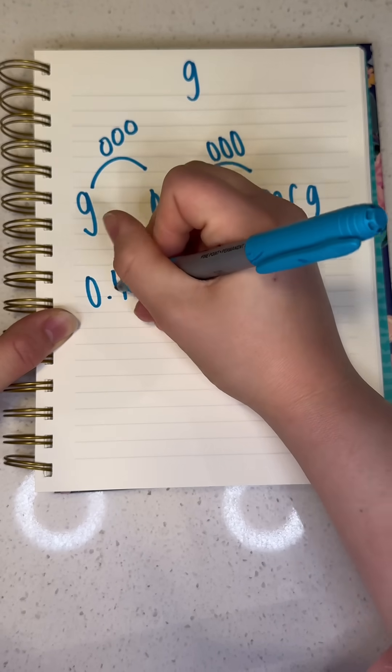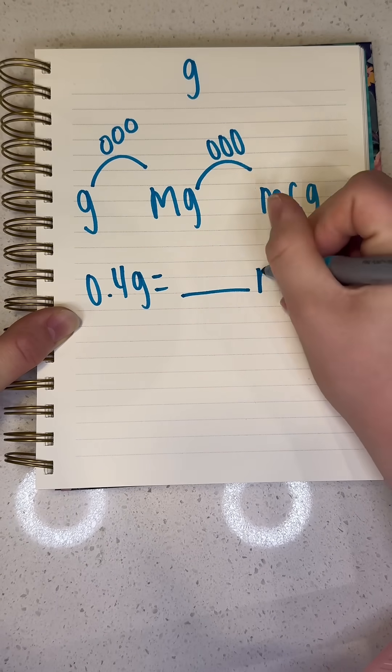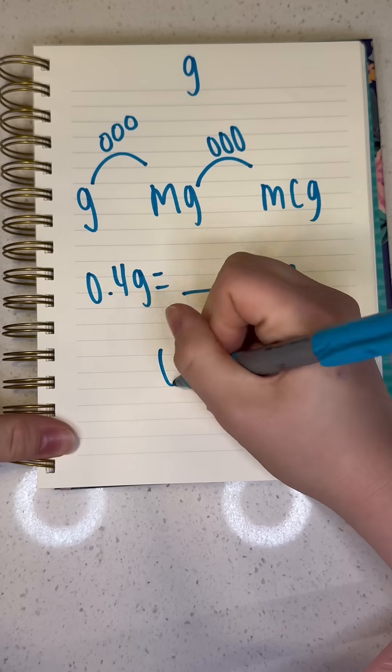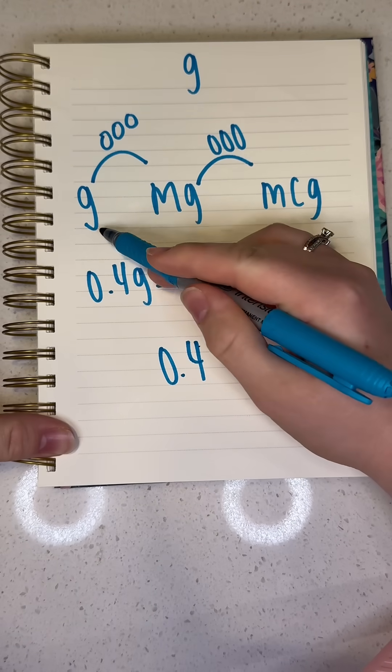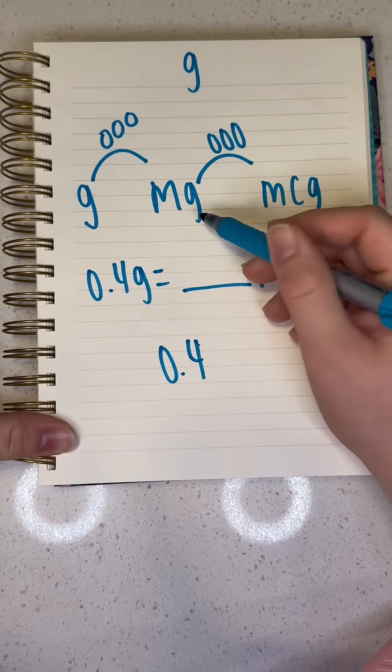We have 0.4 grams and we want to know how many milligrams is that. So think of 0.4. Now you see grams is right here. We know we have to move it three places over to get milligrams.